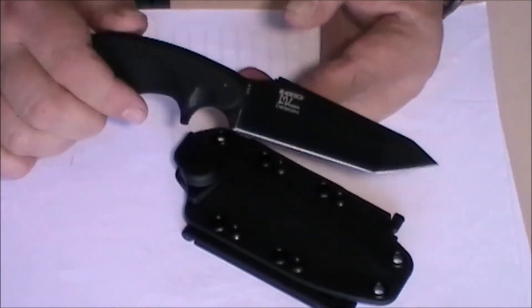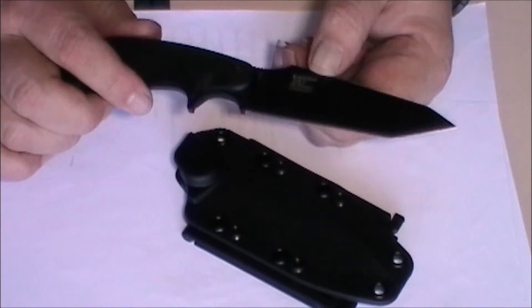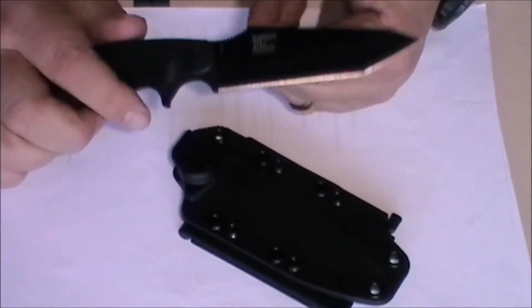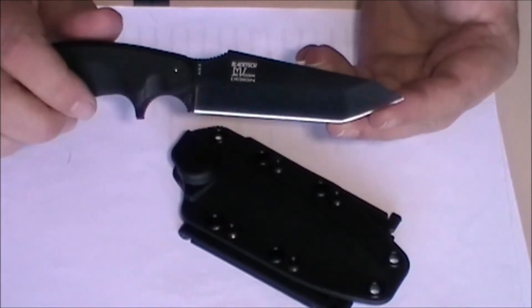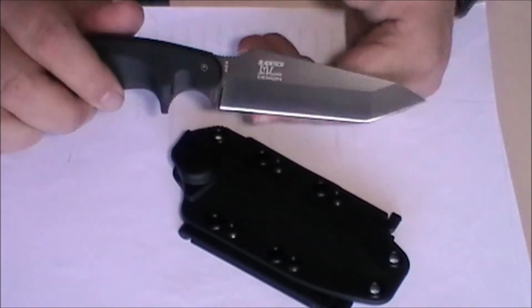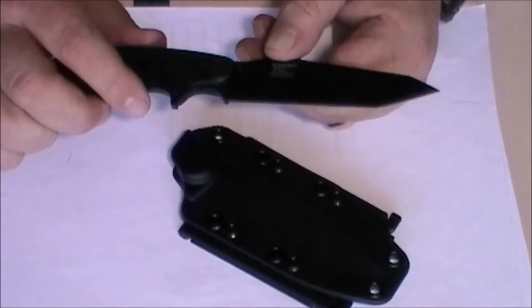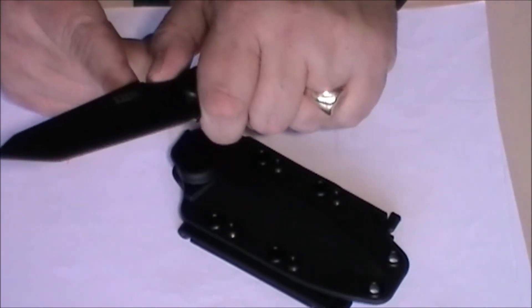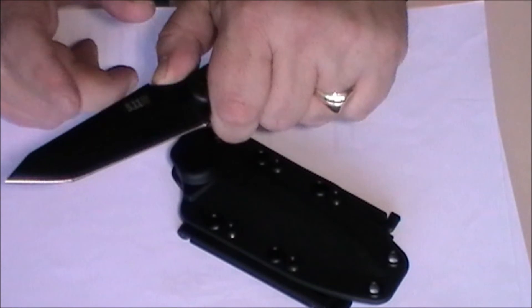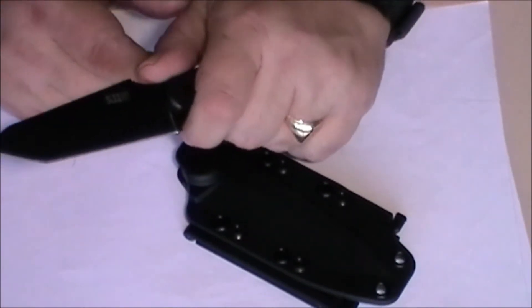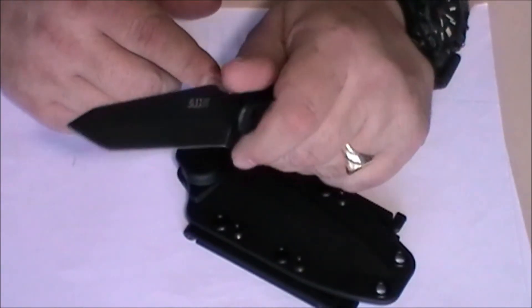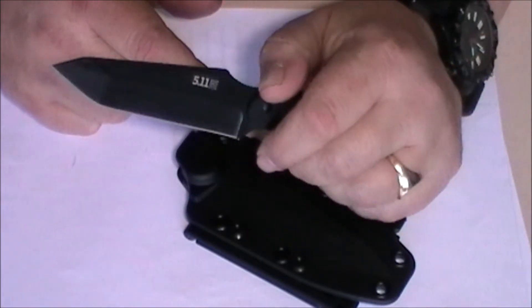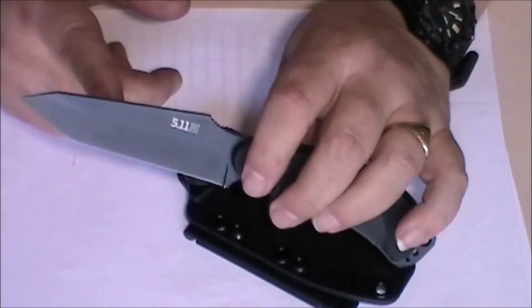The edge retention is extremely good with AUS-8, and the ease of sharpening is another major plus point. We've got the Tanto-shaped blade, which is incredible. Any of you that have already got a Tanto-shaped blade will know that it's exceptionally good at penetrating particularly tough areas.